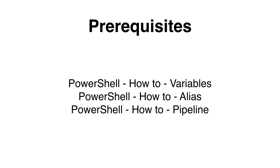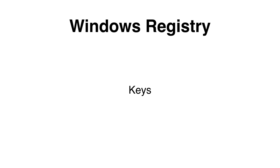If you are unsure or you would like to refresh your memory, please view one of my earlier sessions. The registry contains two basic elements. Registry keys are container objects similar to folders. Keys may contain values or further keys. Keys are referred with a syntax similar to a Windows path name, using backslashes to indicate the level of the hierarchy. Registry values are non-container objects similar to files.